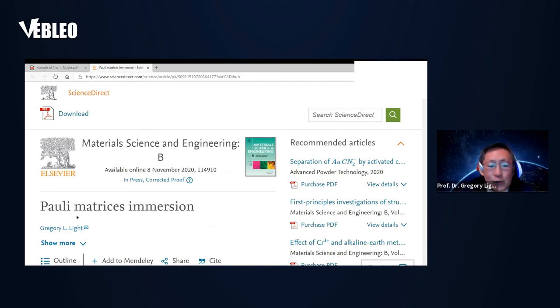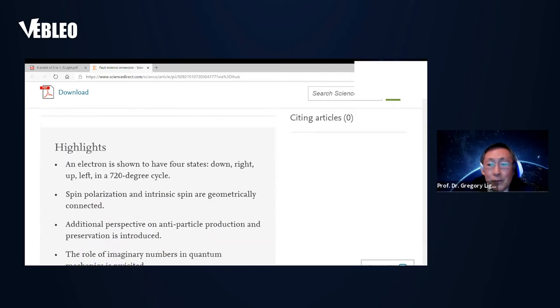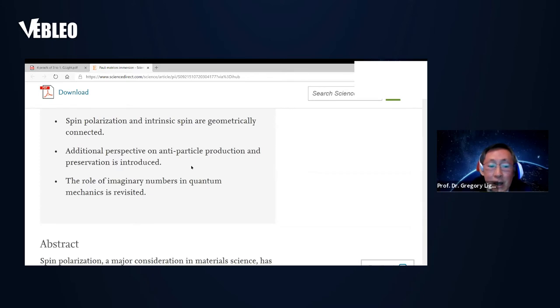Here's my publication, Pauli matrices immersion. As we all know they are two by two, but I have casted to three by three. The highlights here are an electron is not just up and down two states, actually four states in 720 degrees. Spin polarization as implemented by material scientists, and the intrinsic spin from Dirac's spinor I geometrically connected. Additional perspective on the production and preservation of anti-particles is introduced, and the role of imaginary numbers in quantum mechanics is revisited.